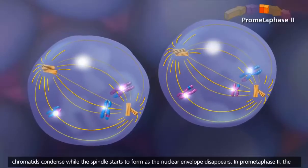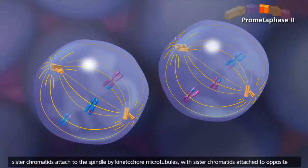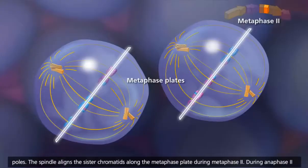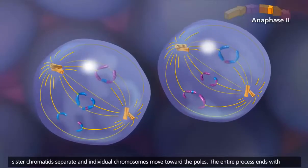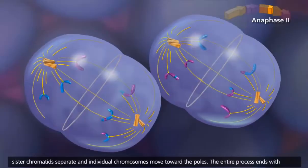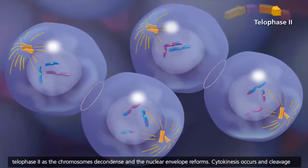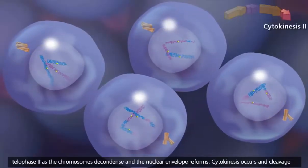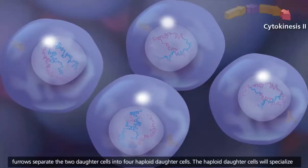In prometaphase II, the sister chromatids attach to the spindle by kinetochore microtubules, with sister chromatids attached to opposite poles. The spindle aligns the sister chromatids along the metaphase plate during metaphase II. During anaphase II, sister chromatids separate and individual chromosomes move toward the poles. The entire process ends with telophase II, as the chromosomes decondense and the nuclear envelope reforms. Cytokinesis occurs and cleavage furrows separate the two daughter cells into four haploid daughter cells.